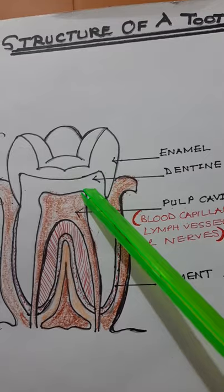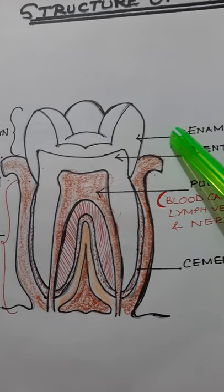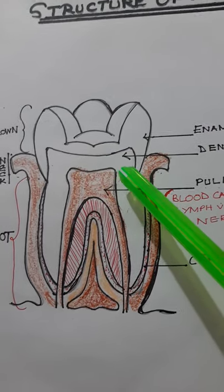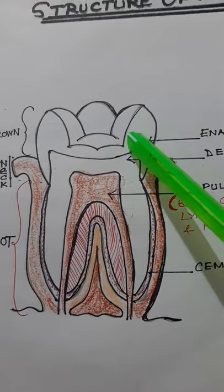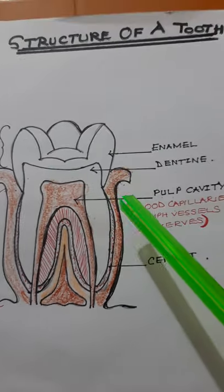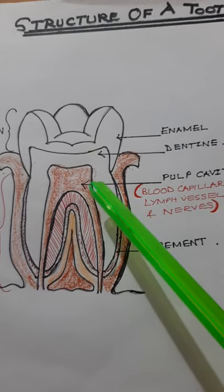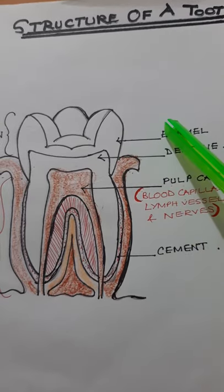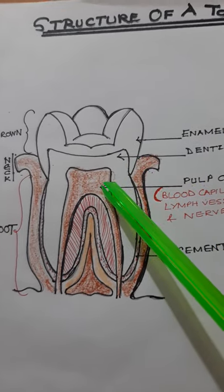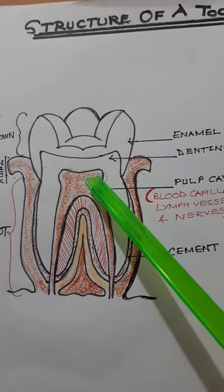The crown is covered by a very tough material known as the enamel. Enamel is the toughest material in the body. Below the enamel is the material that makes up the entire tooth, called the dentine. Dentine is also very tough, but not as tough as the enamel.